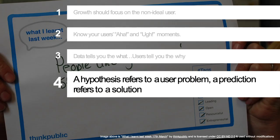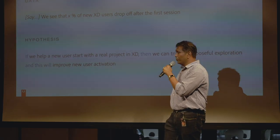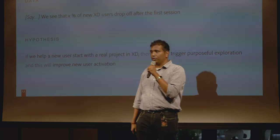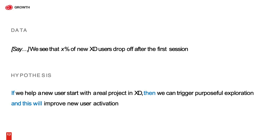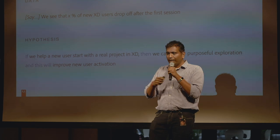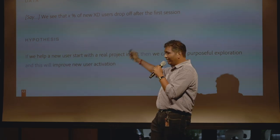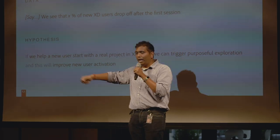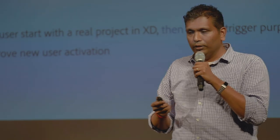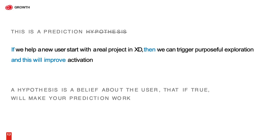This next learning might be a little controversial. Let's say we see that X percent of our new users are dropping off after the first session. Here's a prediction: if we help a new user with a real project, then we can trigger purposeful exploration and improve our activity. From a couple of talks this week, people said that's what a hypothesis should be — if, then, and. But my user research team schooled me on this: that's not a hypothesis, that's a prediction. You're predicting what will happen. The hypothesis is the underlying reason why you think it would work.